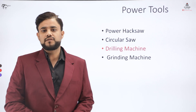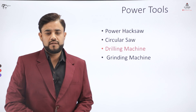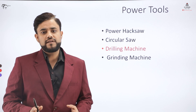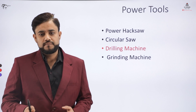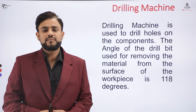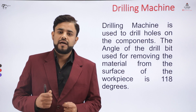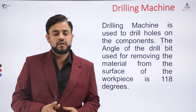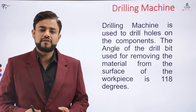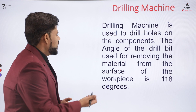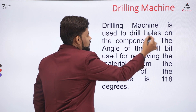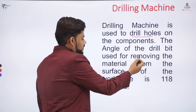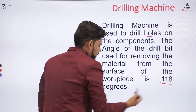Now, the second power tool is the drilling machine. As the name suggests, the drilling machine is used to drill holes on the surface of either wood or metal. Unlike hand-operated drilling machines you may have seen, this drilling machine is generally power-driven using electric power. It is used to drill holes on the surface of the workpiece, and the angle of the drill bit used to remove the material is generally 118 degrees.